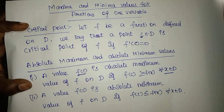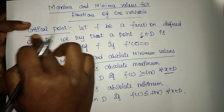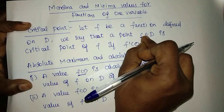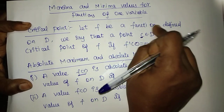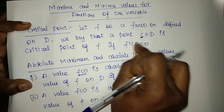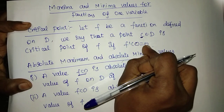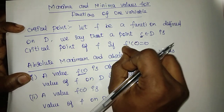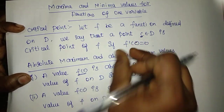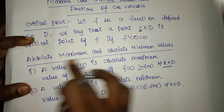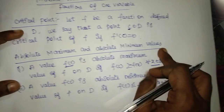This function relates to the concept of a critical point. The point is given in the domain. The differentiation value is 0. So if we have a critical point, we will differentiate the function and equate it to 0. Next, we find the absolute maximum value and absolute minimum value.